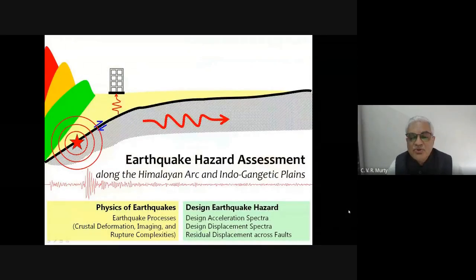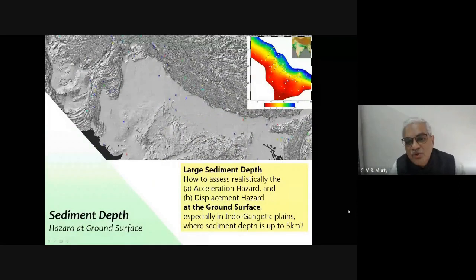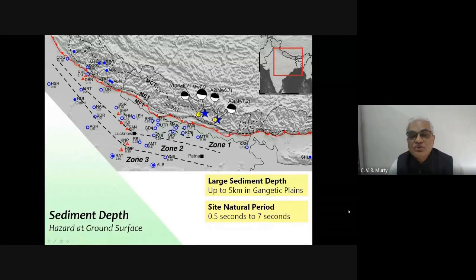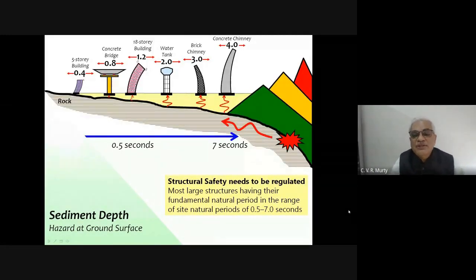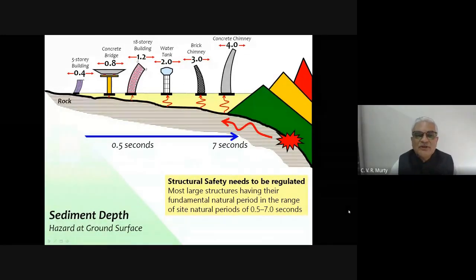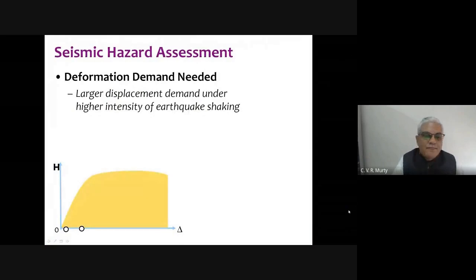Earthquake hazard assessment must understand the physics and especially displacement hazard. The Indo-Gangetic plain sediments have a natural period of 0.5 to 7 seconds. Structures with natural periods matching the site period will be in great trouble if a big earthquake occurs in the Himalayas, potentially putting most of our structures to test. Different structures have different natural periods, and site period matching is a serious concern we must be forewarned about.